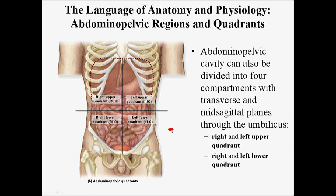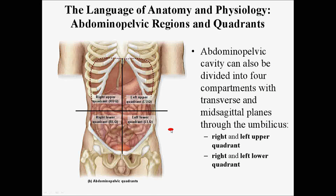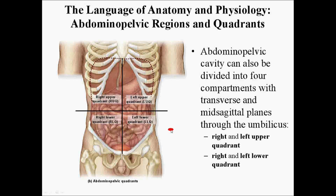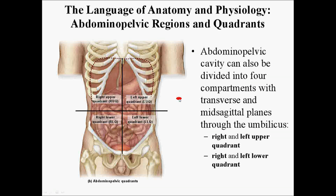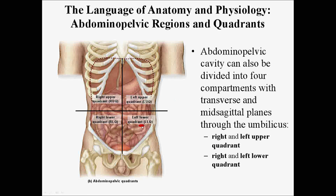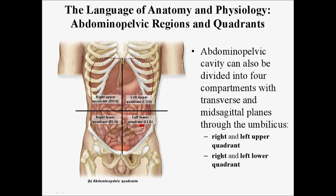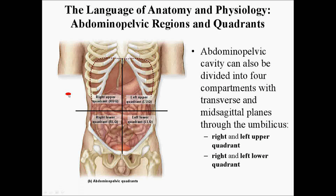Another way to break up the abdominal pelvic cavity is to break it up into quadrants. If you put a giant plus sign right through the navel, you will have a left upper quadrant, a left lower quadrant, a right lower quadrant, and a right upper quadrant.